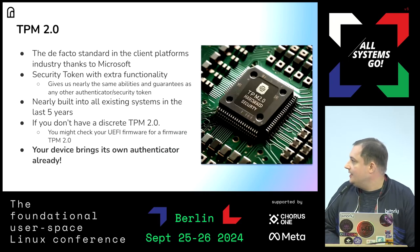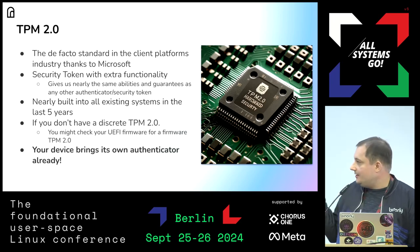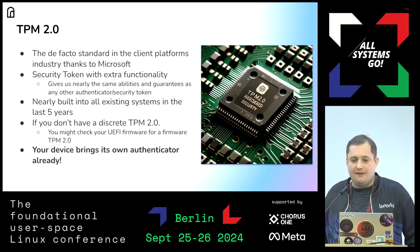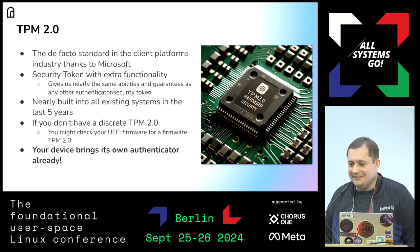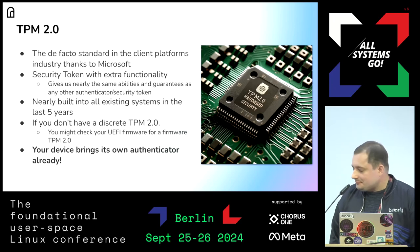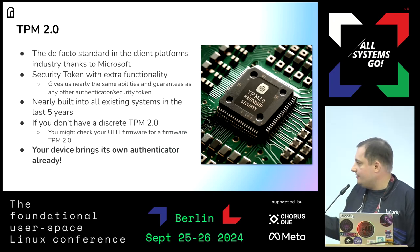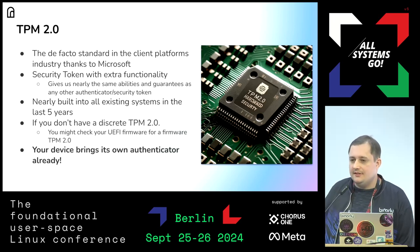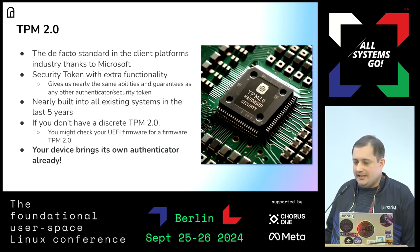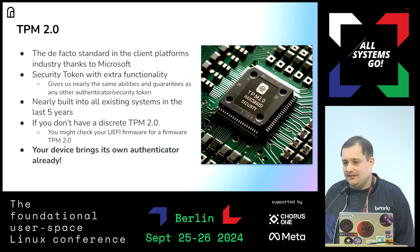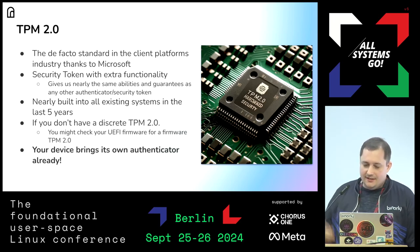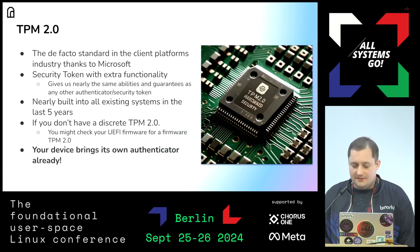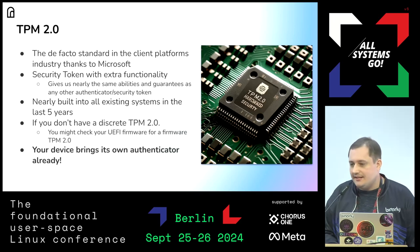So how do we do passwordless authentication without external hardware under Linux? We want to utilize the TPM 2.0 because it's widely the standard right now — a lot of systems have it, including my laptop. The security token gives us extra functionality, but we basically just need the security token functionalities, and it gives us the same guarantees as any other authenticator or token. The TPM is hardened enough. If you don't have a discrete one, you can also check your BIOS or UEFI settings — sometimes the platform offers a firmware TPM. Your device already brings an authenticator with it, so why use an external one?